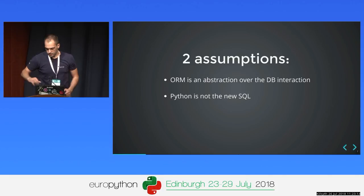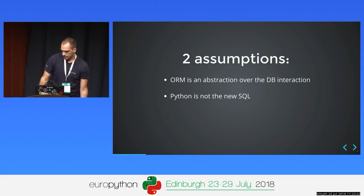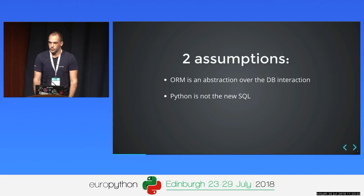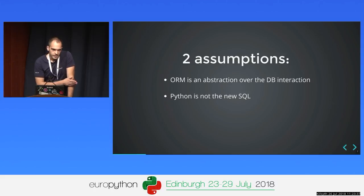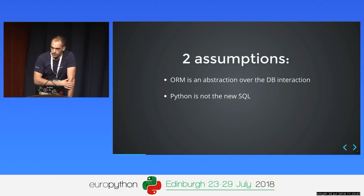We can write a single Python class which represents the database table, and we can call methods like .all() that will fetch all the rows from the database. My second assumption is that Python is not the new SQL. What I mean is that SQL is great when you want to make database operations, but using the ORM makes you think you can do the WHERE clause with a simple Python filter, which is not a good idea.